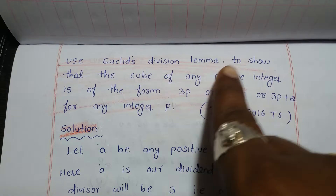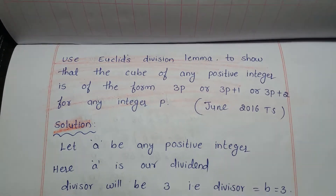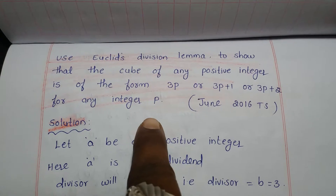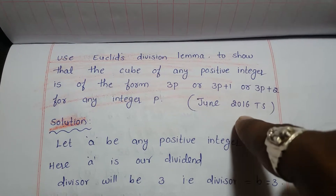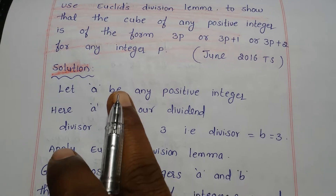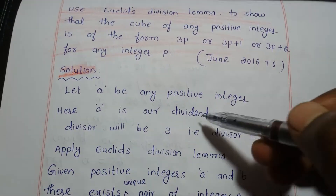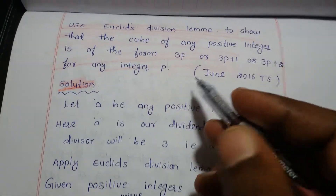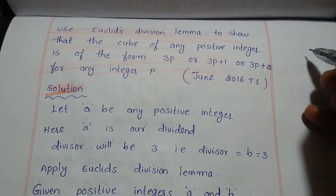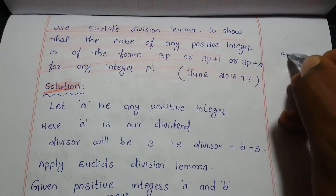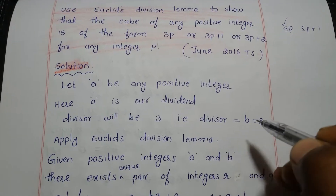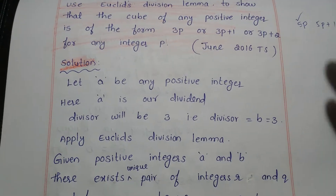Use Euclid's division lemma to show that the cube of any positive integer is of the form 3p, 3p plus 1, or 3p plus 2, for any integer p. This question is given in June 2016 Kalangana state government paper. Let a be any positive integer. Here a is our dividend; the divisor will be 3. Since the question asks for the form 3p, we take divisor b equal to 3.